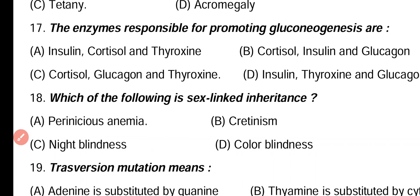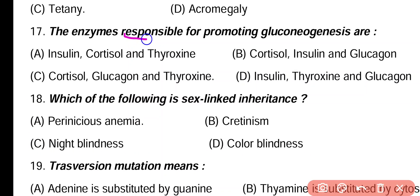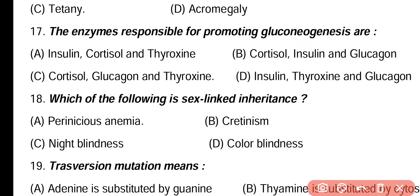Question 17. Enzymes that are responsible for promoting gluconeogenesis are: insulin; cortisol and thyroxin; insulin and glucagon; cortisol, glucagon and thyroxin; insulin, thyroxin and glucagon. Correct answer is option C. Gluconeogenesis is a process in which amino acids and proteins are converted into glucose, and this process is promoted by glucagon, cortisol, and thyroxin.